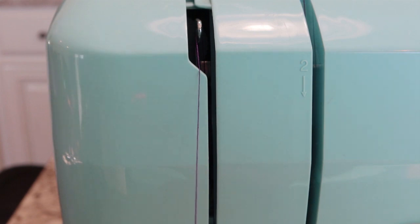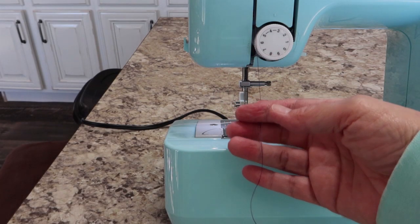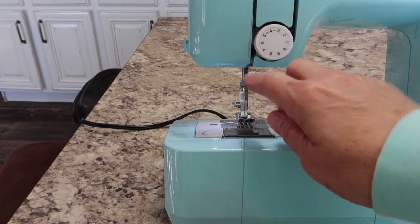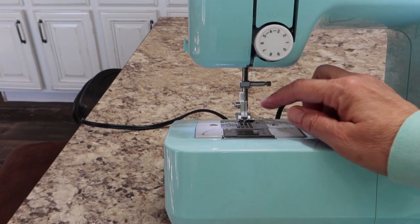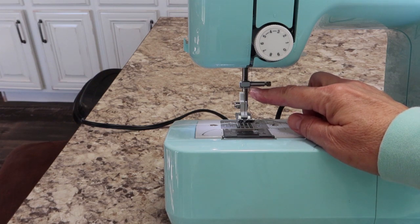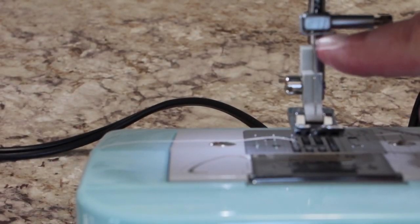Now, we're headed down towards the needle. You're just going to let it drop right on down this channel, and then come to the back. Now, right here is a little horizontal metal plate. We need to get the thread under there.